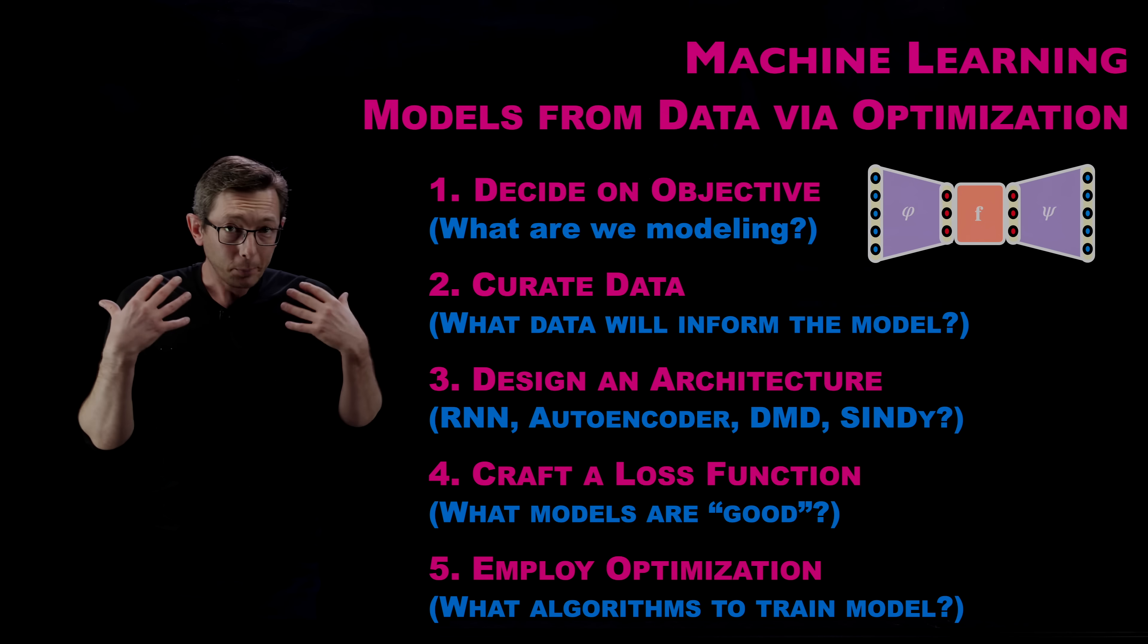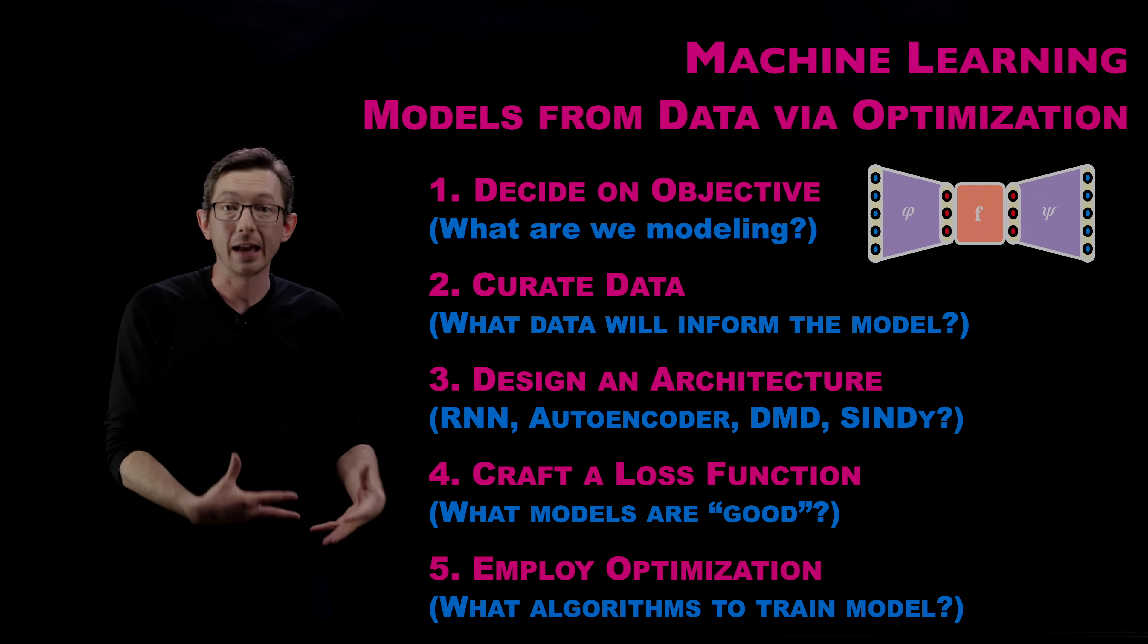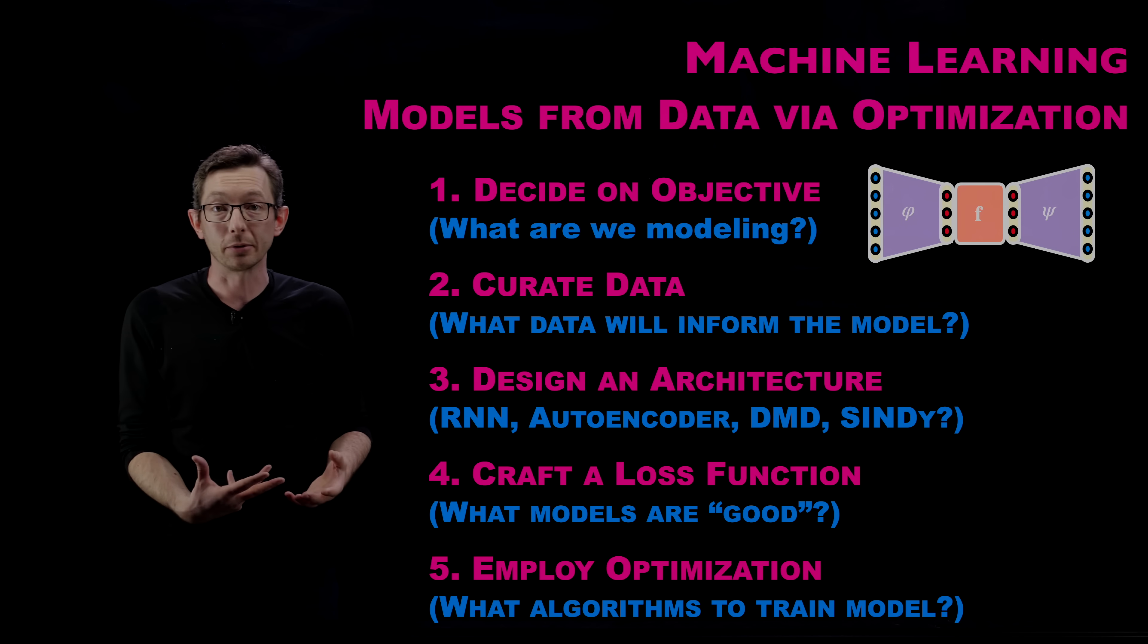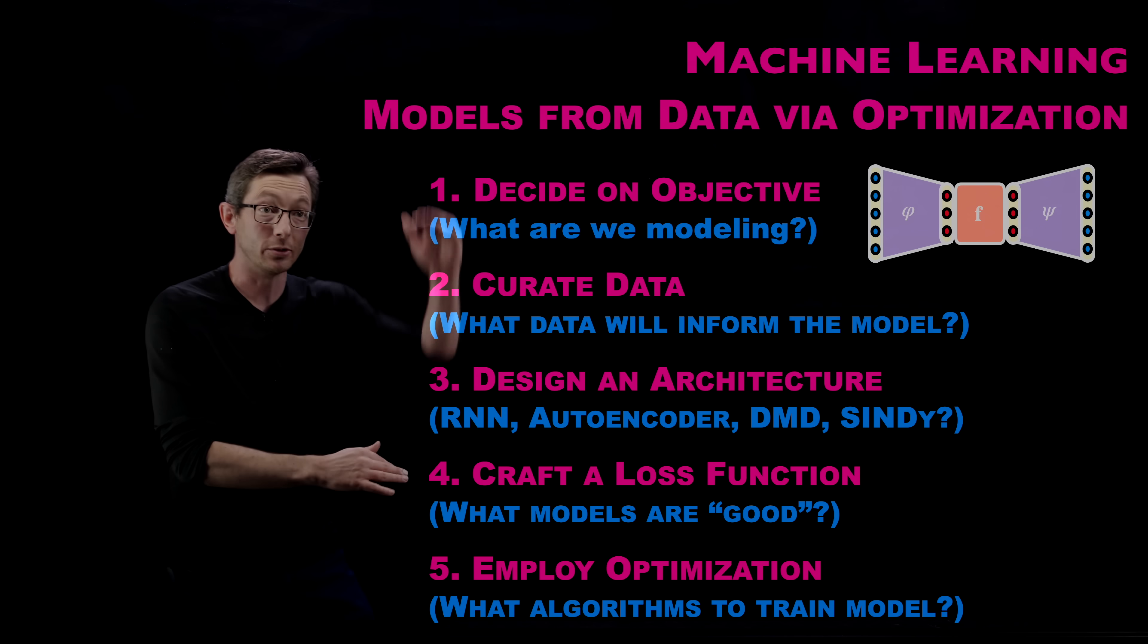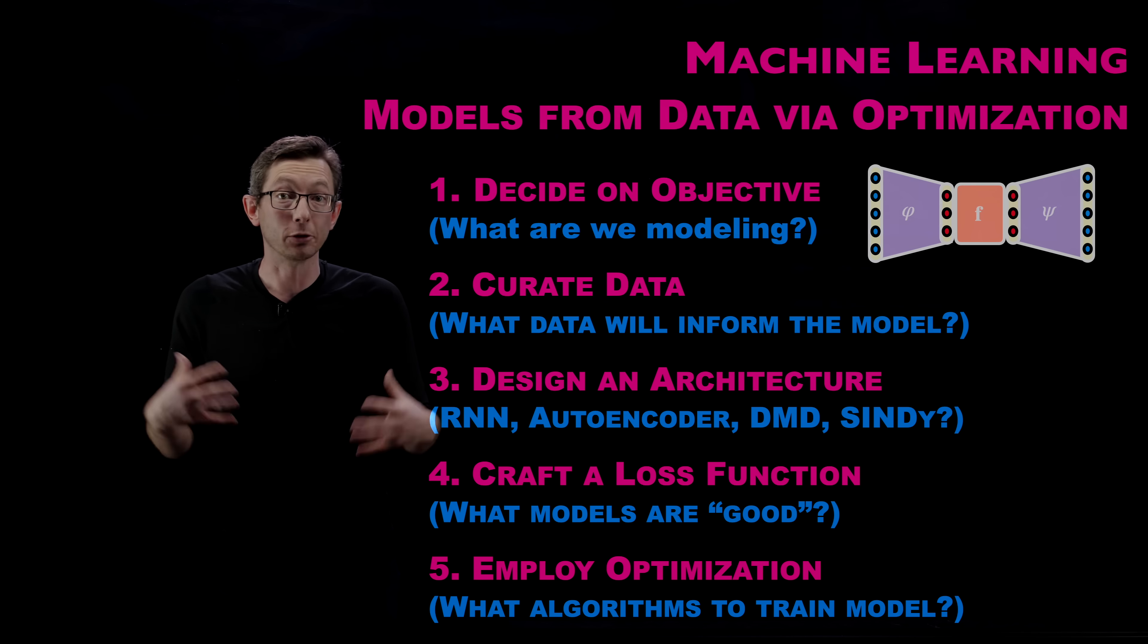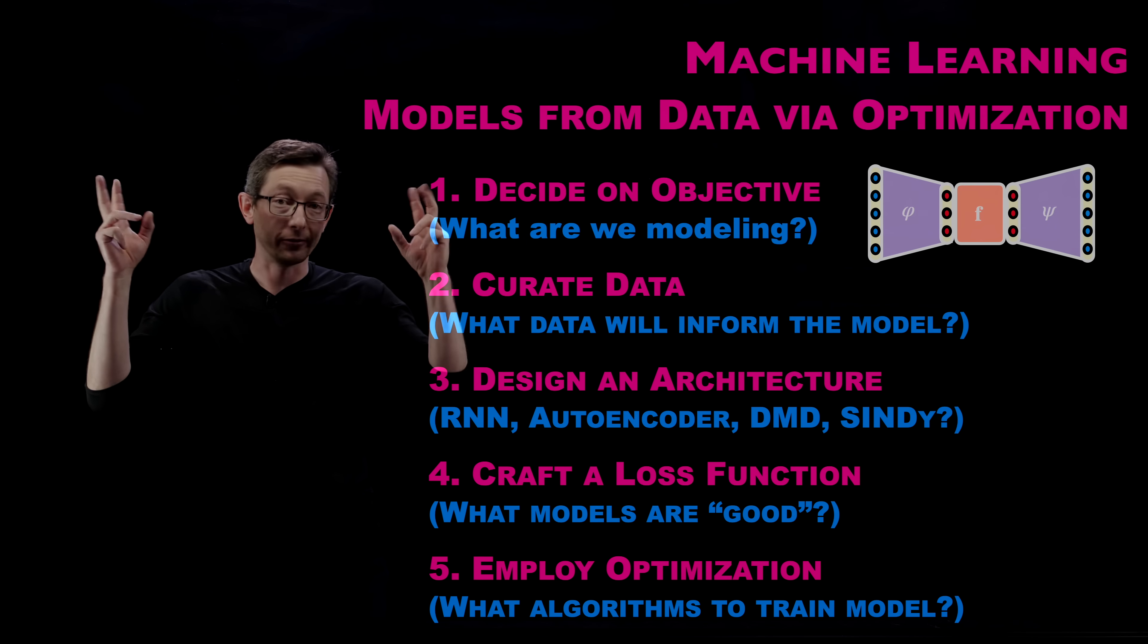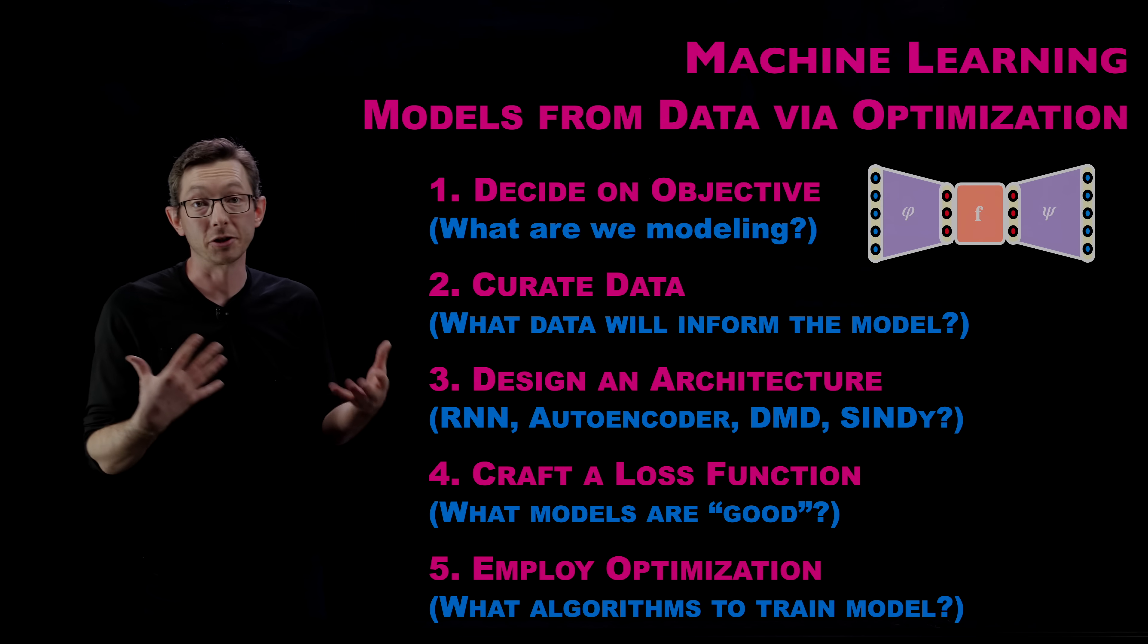The last point is if I have a physical system, if I have a system governed by F equals MA or some kind of engineering first principles, I often have opportunities to put in those first principles in each of these stages and make my machine learning model better and more physical by construction. That's called physics-informed machine learning and we're definitely going to talk about that in the context of engineering systems.